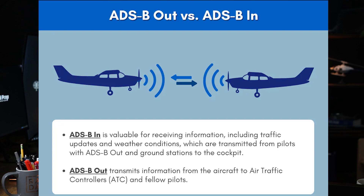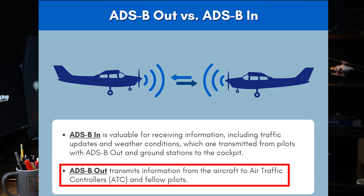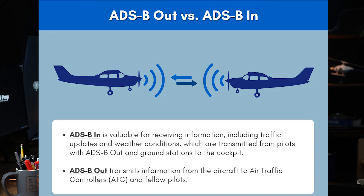ADS-B is divided into two components: ADS-B Out and ADS-B In. ADS-B Out automatically transmits an aircraft's GPS-derived position, velocity, altitude, and other information to ATC at ground stations and other aircraft equipped with ADS-B In.